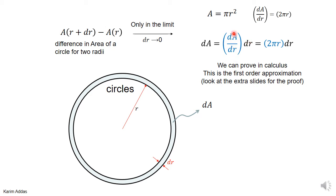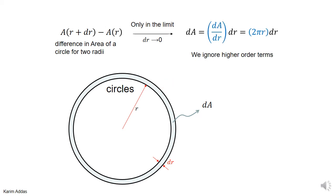The first-order approximation to dA is the derivative of the area with respect to r times dr. The derivative dA/dr is 2πr, so multiplying by dr gives the area difference. This is valid in the limit when dr goes to zero. There may be higher-order terms like dr² but we can ignore those. So dA ≈ (dA/dr)·dr = 2πr·dr.